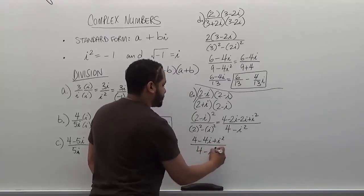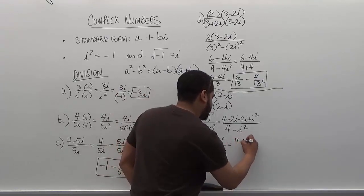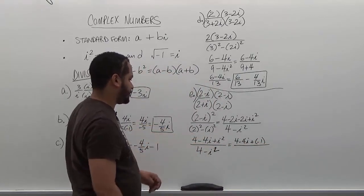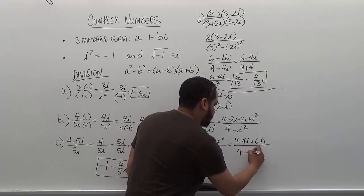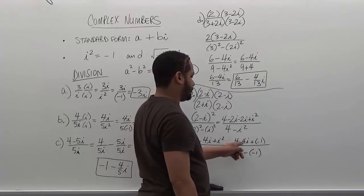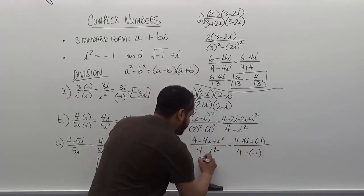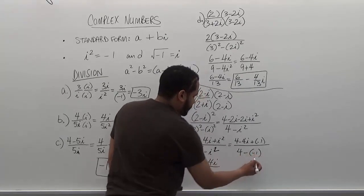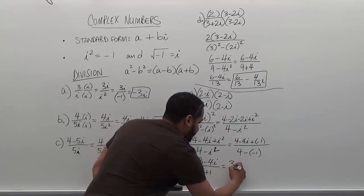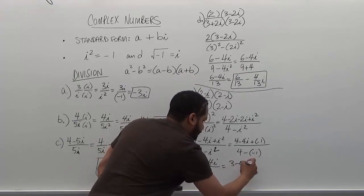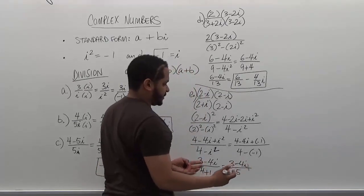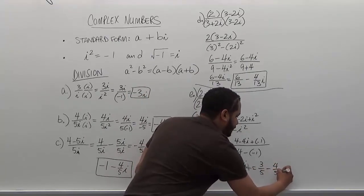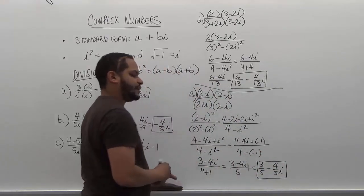We substitute negative one for i². So the numerator becomes four minus 4i plus negative one, and the denominator becomes four minus negative one. Four plus negative one is three, so the numerator is three minus 4i. And four minus negative one is five on the denominator. Finally, we have three minus 4i over five. We split the fraction: three over five minus four over five i. And we're done. Thank you.